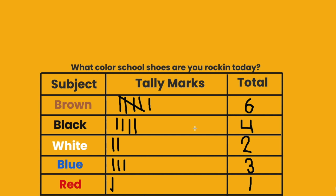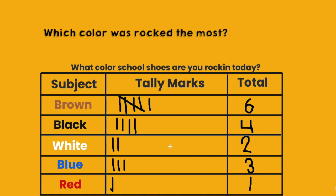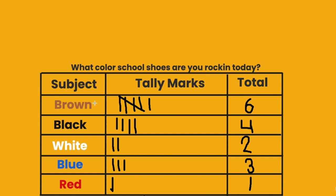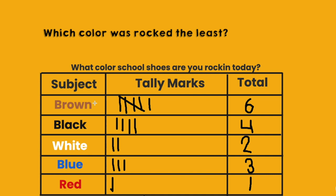Now let's look at the data and try to analyze it. Looking at the information, I wonder what color shoe did most teachers rock today. If I look at my tally chart, I want to find the color that has the most tally marks, and that would be brown. Brown has six tally marks, so six teachers wore brown shoes — that's the color we saw the most. Now I wonder which color received the least amount of votes. I need to find which color had the least amount of tally marks, and it looks like red only had one teacher, so only one teacher wore red shoes.